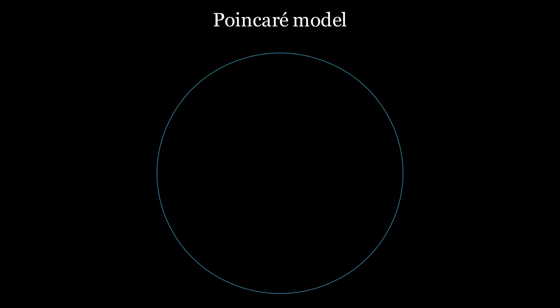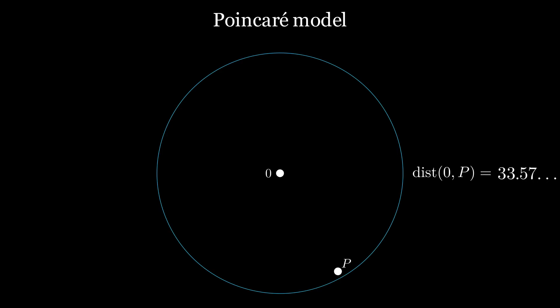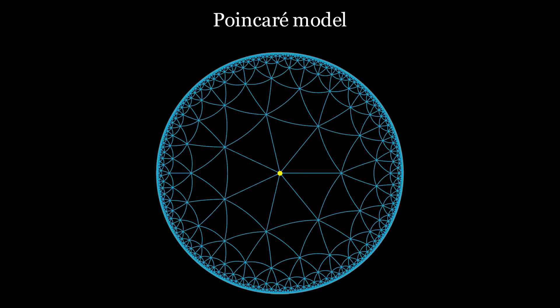Even if it appears that way at first glance, the hyperbolic plane is by no means limited. If we let a point move in one direction with constant speed, we notice that it never reaches the boundary of the Poincaré model. The unit circle itself does not belong to the Poincaré model and cannot be reached. This distortion can be visualized by looking at a tiling of the hyperbolic plane — all these triangles have the same hyperbolic shape and area. The Poincaré model thus provides a highly distorted representation of hyperbolic space.